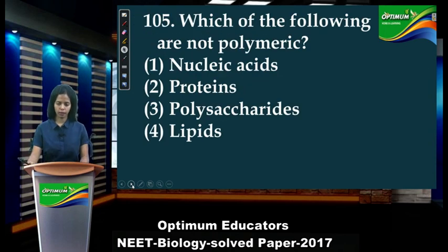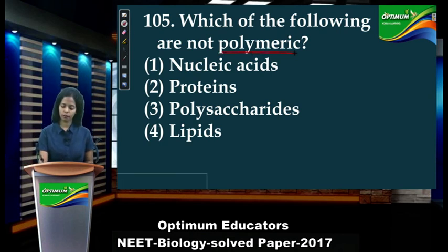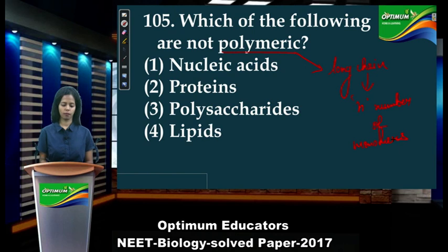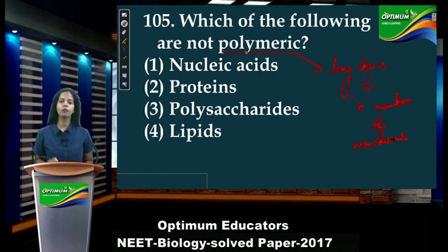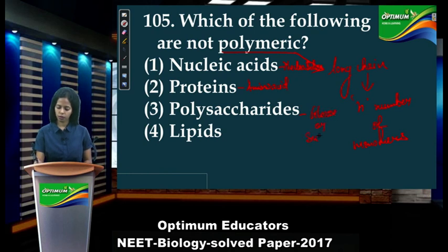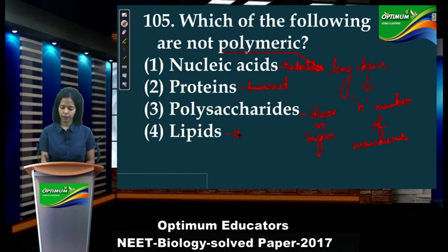Next: 'Which of the following are not polymeric?' Polymeric means a long chain of any chemical formed by joining many monomers. Nucleic acids are polymers of nucleotides. Proteins are polymers of amino acids. Polysaccharides are polymers of glucose or sugars. But lipids are not polymers — they are esters of alcohol and fatty acids. So lipids is the correct answer.